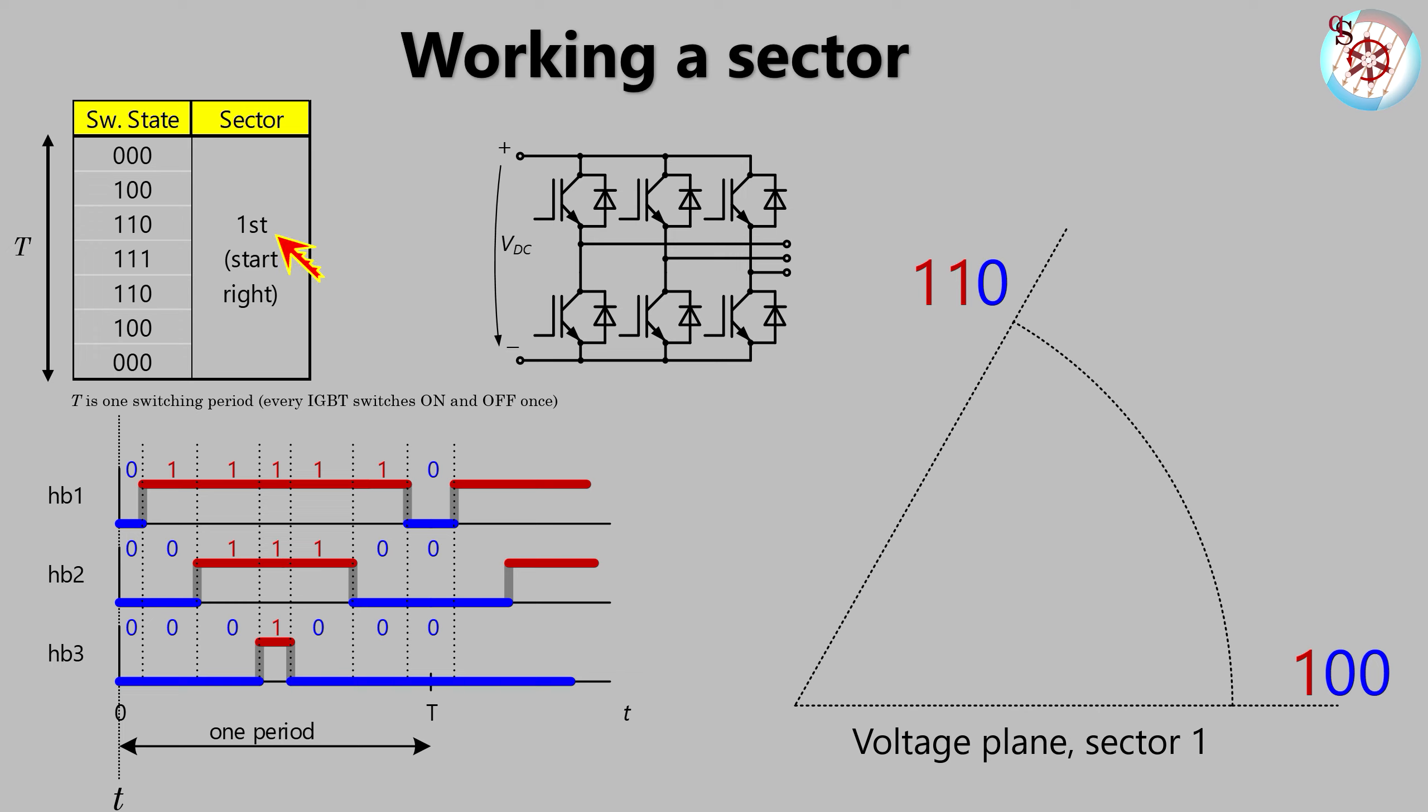We start with our triple zero vector. Nothing happens with everything being zero. Then we enter state one double zero and the voltage vector is integrated over time while this state is active. With transition to state one one zero the integrated voltage changes course because now the one one zero vector is integrated over time.